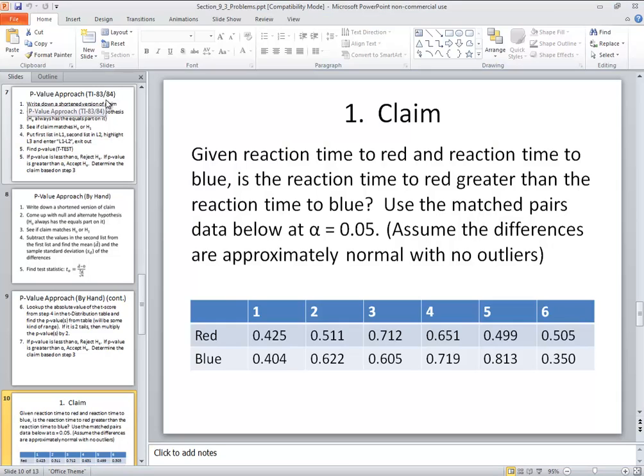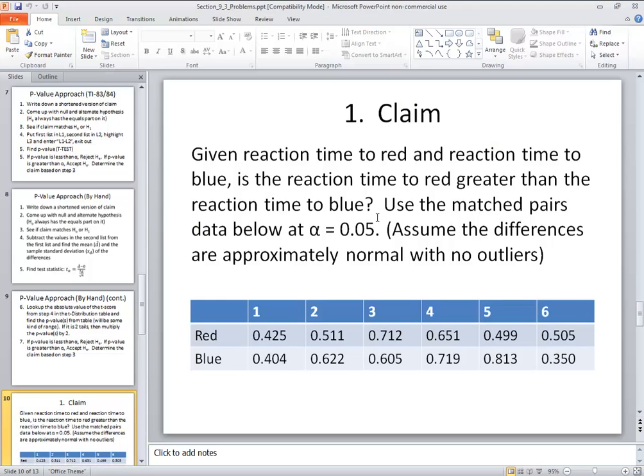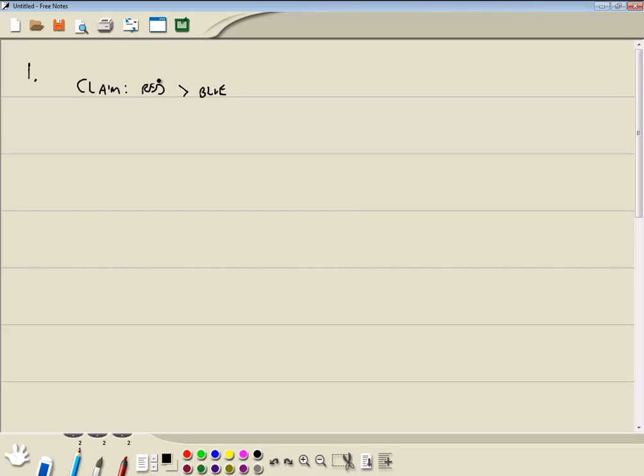Given reaction time to red and reaction time to blue. Is reaction time to red greater than reaction time to blue? That sounds like our claim. So red greater than blue. You really want to be very sparse on your claim here. Red greater than blue. Now, when I write that down, you first kind of scan these looking for your claim. Your first one here is always your first population, first sample. And then your second one here is always your second population, second sample. Use that as your convention. So write down a shortened version of the claim. And then whatever's here is one, whatever's here is two.